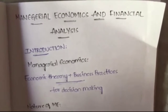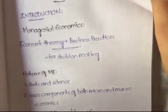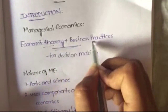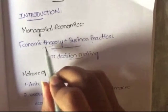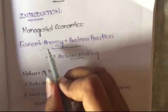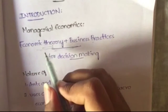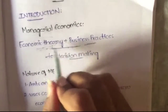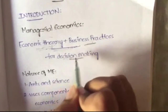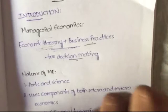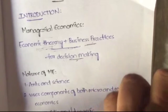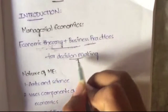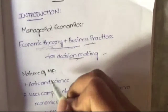First, let's see the definition of managerial economics. Managerial economics is the integration of economic theory with business practices for making decisions. That means economic theories — like how to spend money, how to save money, and how to invest money — are integrated with business practices in order to make proper, profitable decisions.